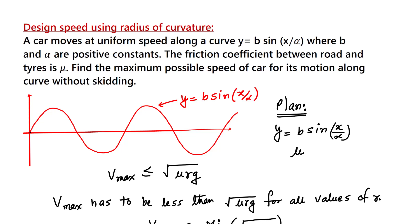Hello friends, in this video I will explain how you can calculate design speed of a road if the curvature of a road is not constant — it is varying. This problem is called design speed using radius of curvature.